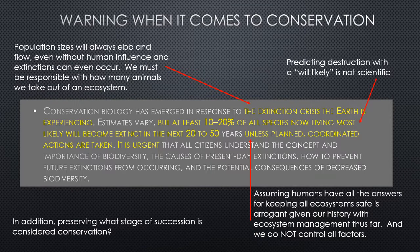A warning about conservation: beware of alarmist speech without scientific support. The textbook states 'conservation biology has emerged in response to the extinction crisis the earth is experiencing now.' The phrase 'extinction crisis' is alarmist. Population sizes will always ebb and flow with or without human interaction — we must be responsible in how we interact with ecosystems, but we cannot control everything.